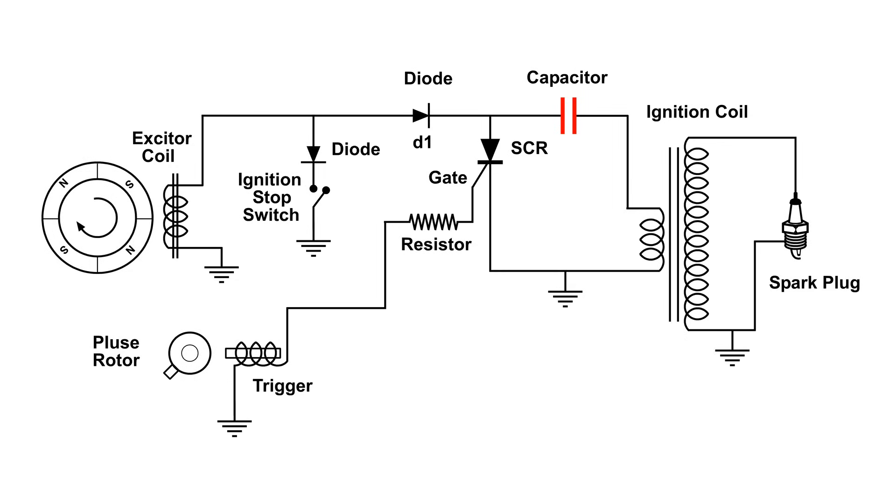As we continue and get to another south pole, we have the polarity again, negative on the bottom and positive on the top. D1 conducts, and we get a little more voltage in that capacitor. Again, we don't have anything until we get to another south pole, and we have a little bit more voltage put into that capacitor.